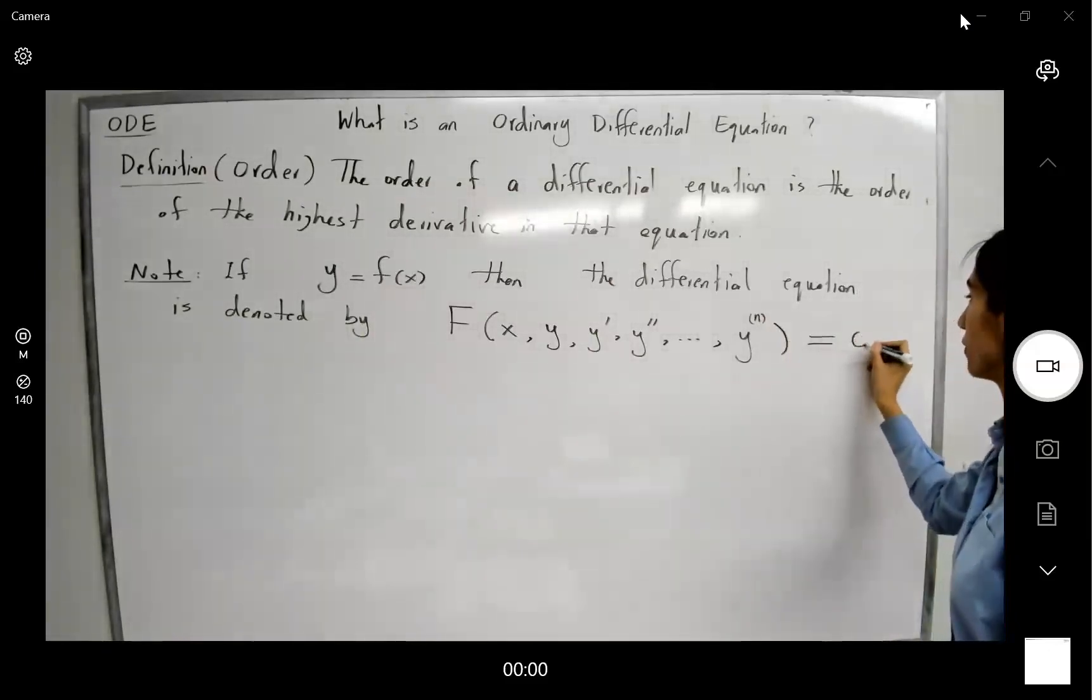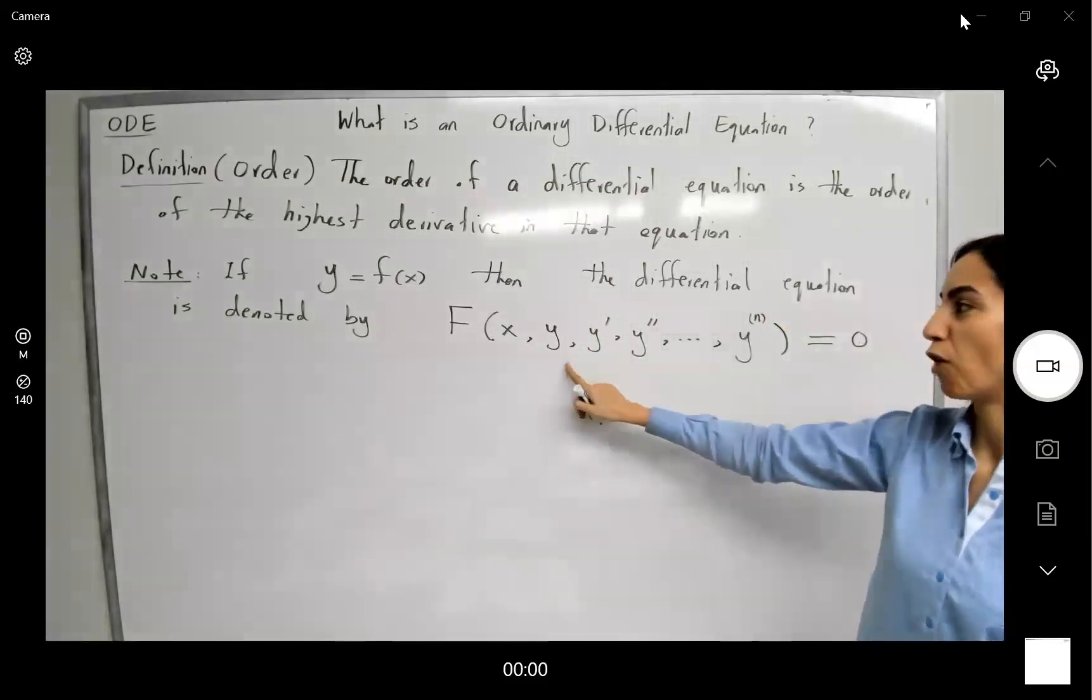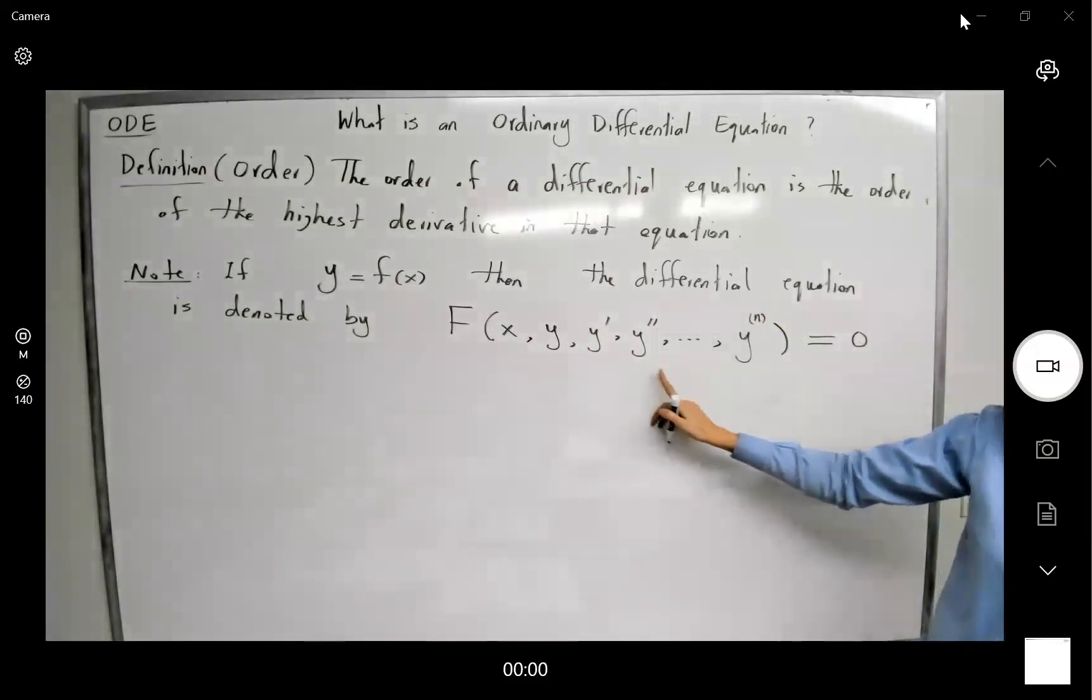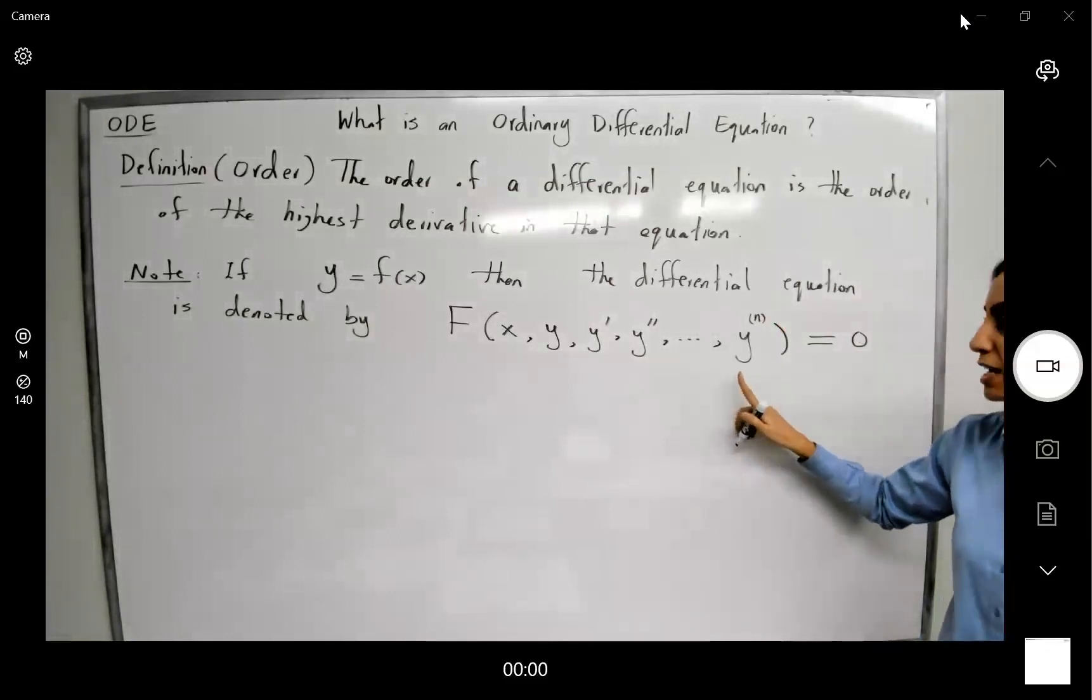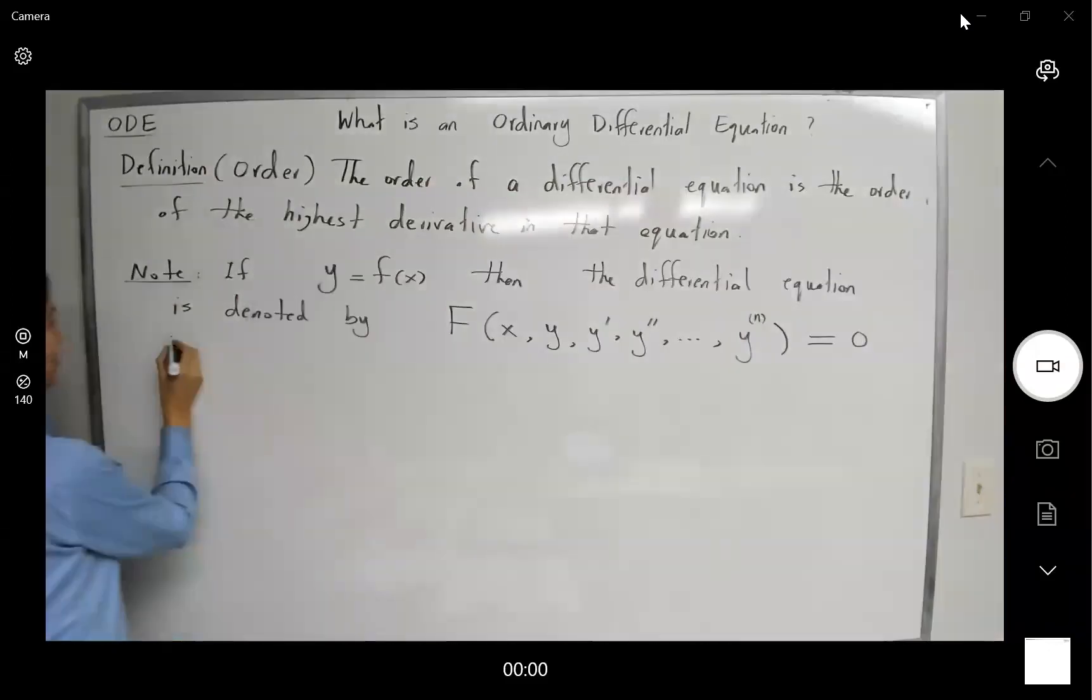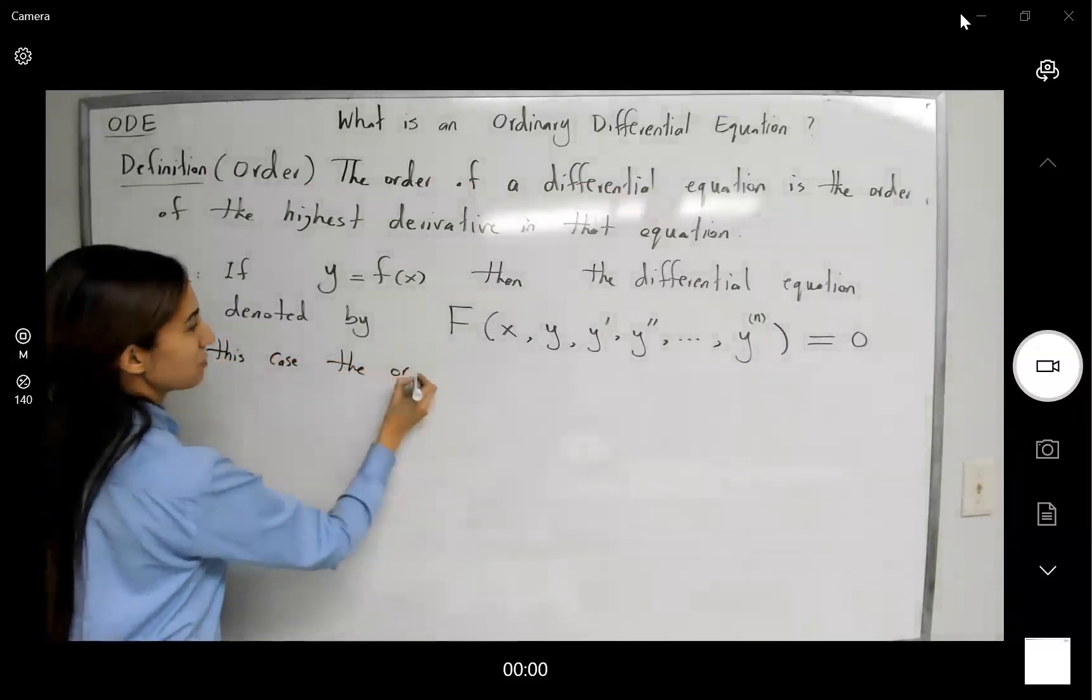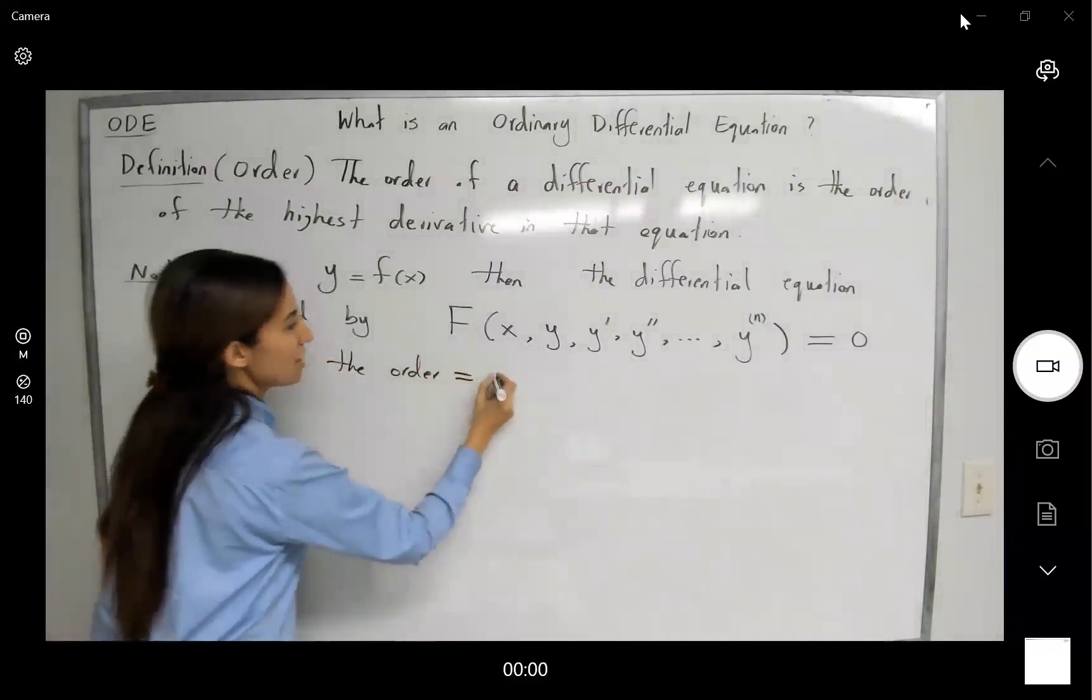So we have a relation between x, y, y prime, the second derivative, the third derivative, and up to nth derivative. In this case, the highest derivative has order n. And in this case, you have a differential equation of order n. In this case, the order is n.